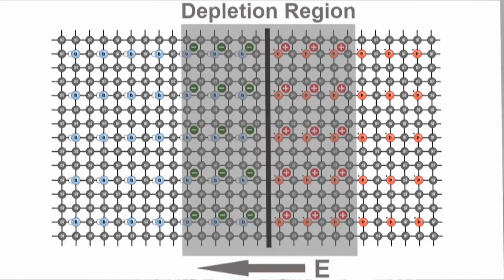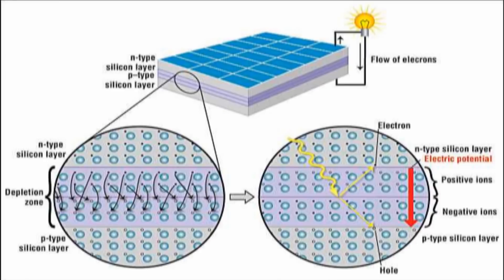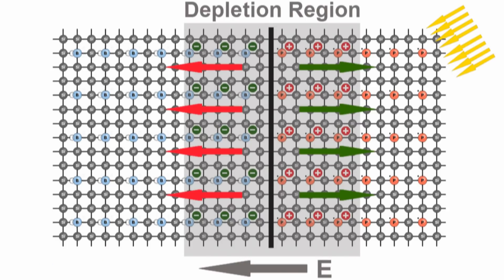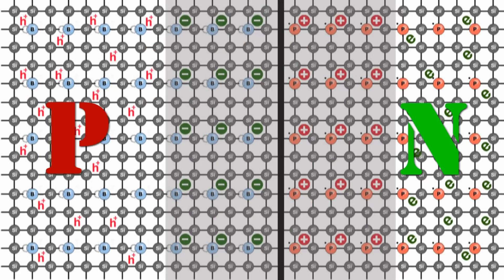This depletion region is the heart of a solar cell — that is where the most important action takes place. When we place a solar cell in sunlight, photons — which are the energy packets in sunlight — fall on the depletion region. The photon gives its energy to the electrons in the bond and ejects them into the conduction band. Because of the strong electric field through the depletion region, these electrons in the conduction band move to the n-side and holes move to the p-side.